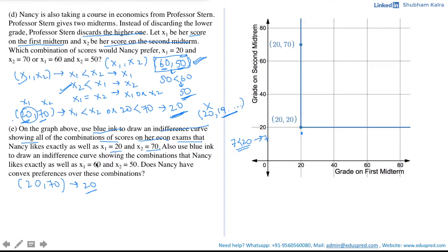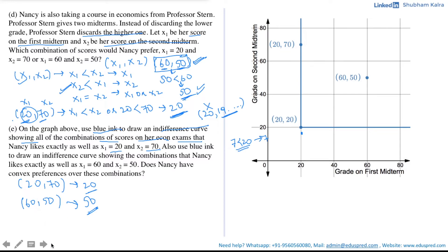Now we draw the indifference curve for x1=60 and x2=50. Nancy scores 60 on the first midterm and 50 on the second, giving the combination (60, 50), where she ends up scoring 50. So we want all combinations whose lower value is exactly 50. For example, (80, 50) gives a score of 50 and lies on the indifference curve.